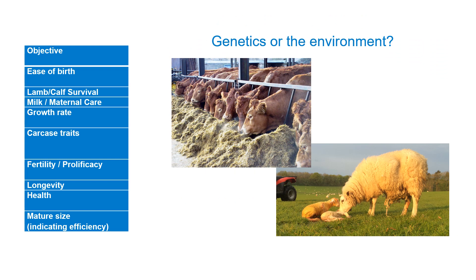Next, think about whether it's actually the genetics or the environment that needs to change. For a number of traits, much faster improvement would be gained by simply changing the nutrition or the health status within the enterprise, and that's absolutely fine. However, long term, the ceiling on performance — once you've sorted out health and nutrition — is always going to be governed by the genetics of the enterprise. So then it is the time to think more closely about the genetic merit of your animals.